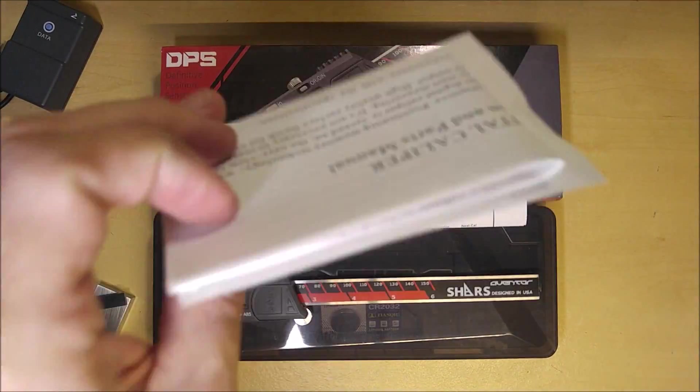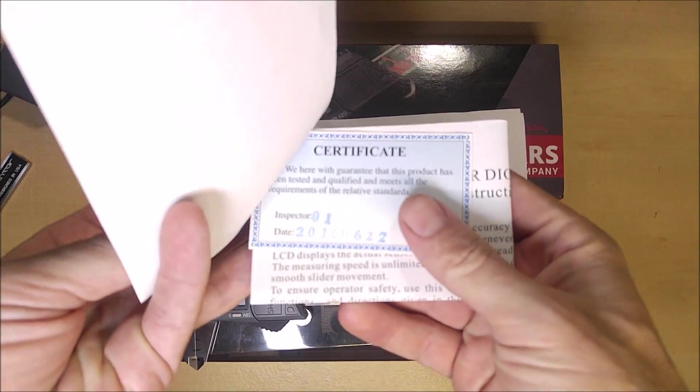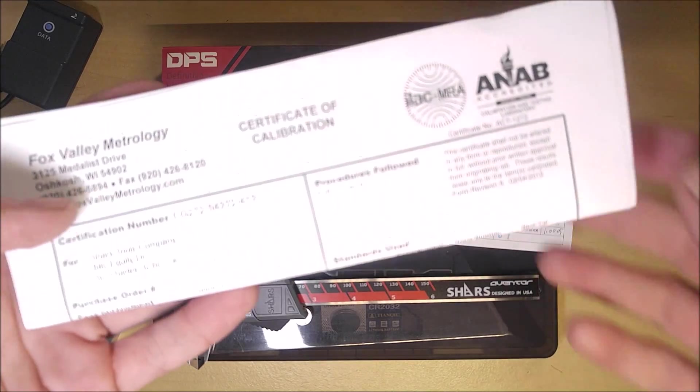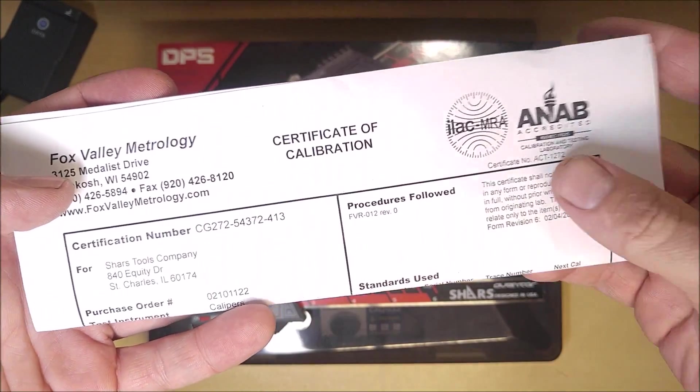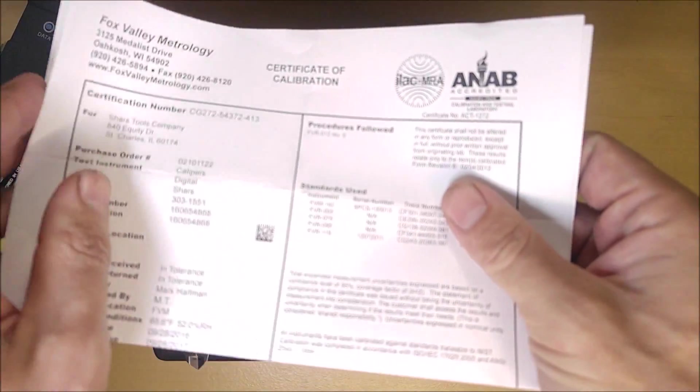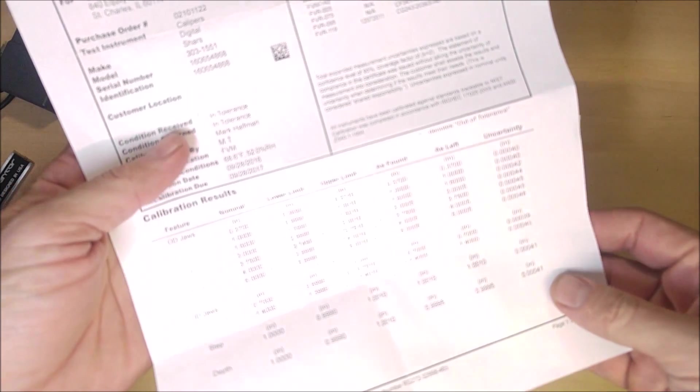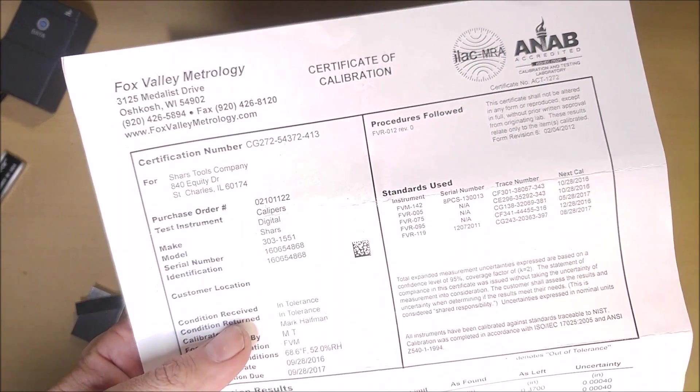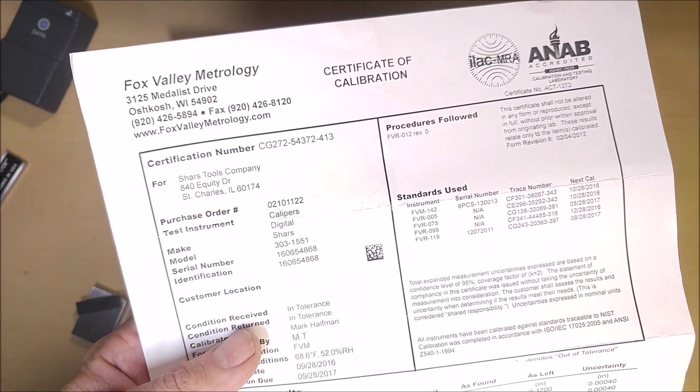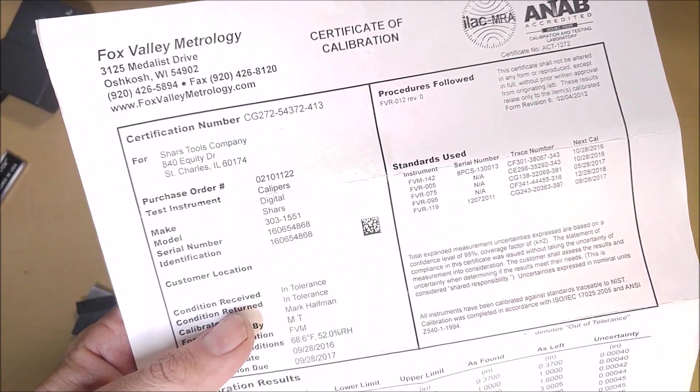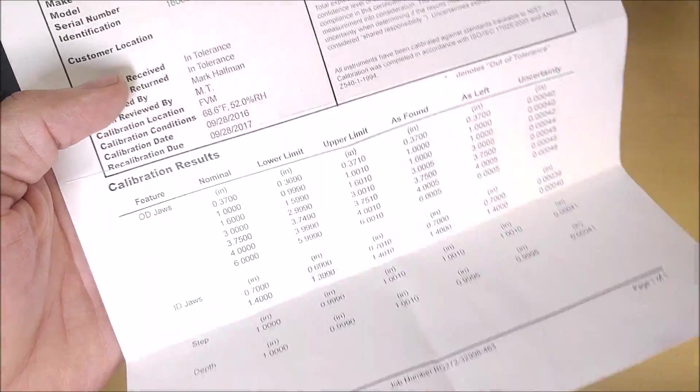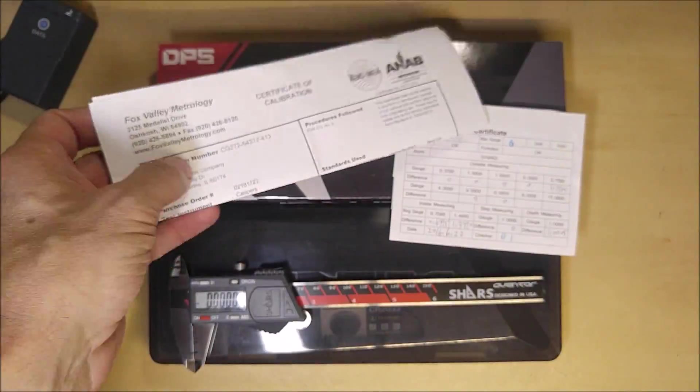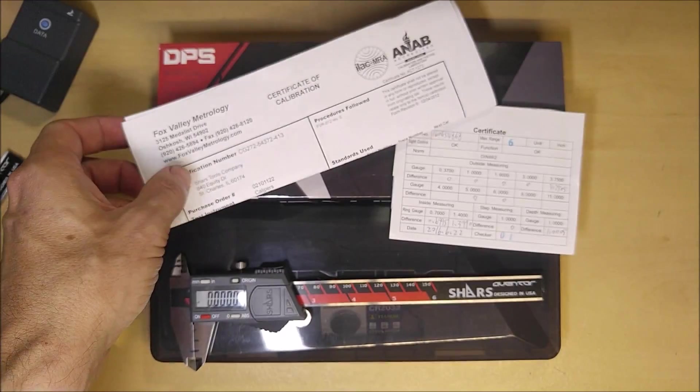With Shars, someone at the factory actually took the time to make sure it met its specs out the factory door. But something Shars is doing that I've never seen any other company do is they're giving you the option to pay a little bit more and get one that is double certified. This one here was certified by a third party independent metrology lab, Fox Valley Metrology in Oshkosh, Wisconsin. Just pay a little bit more and they will have this sent out and double certified by a third party.